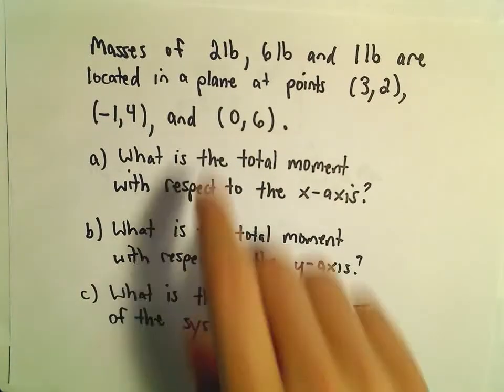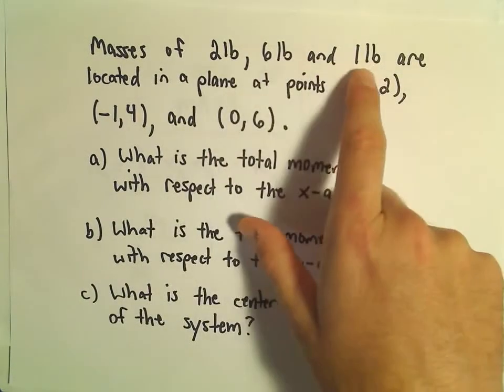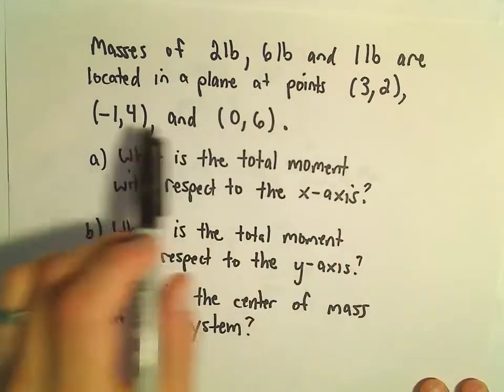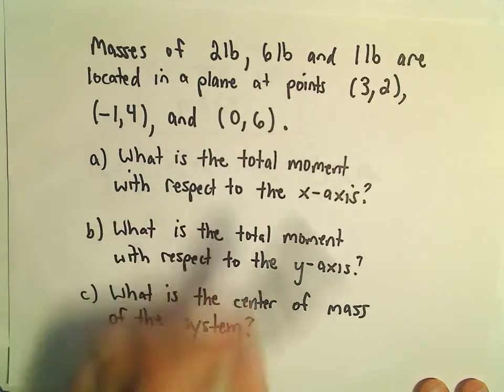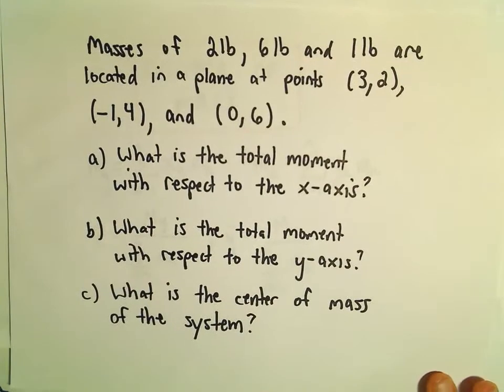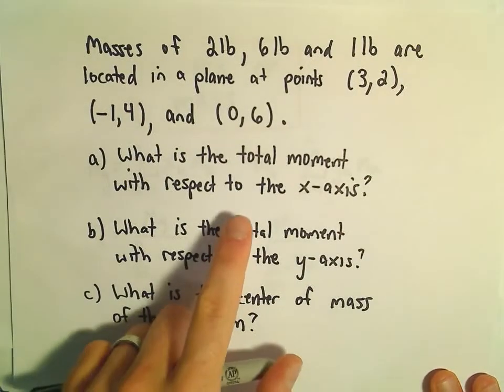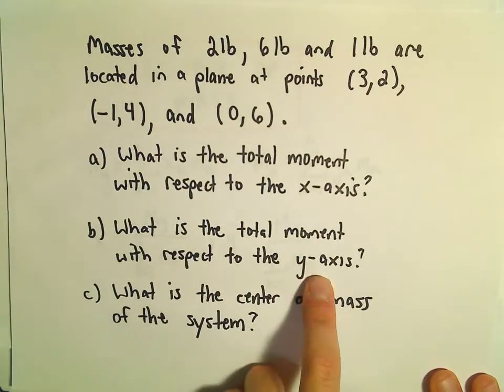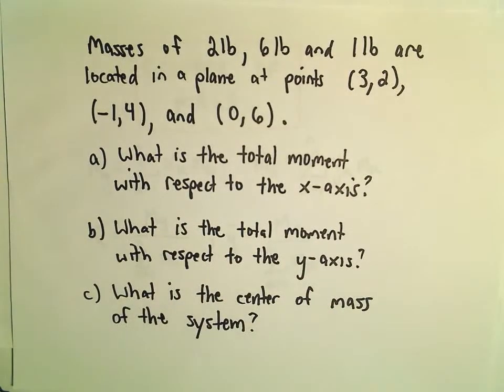Suppose we have masses of 2 pounds, 6 pounds, and 1 pound located at the points (3,2), (-1,4), and (0,6) respectively. We want to figure out what's the total moment with respect to the x-axis, with respect to the y-axis, and then what's the center of mass of the entire system.